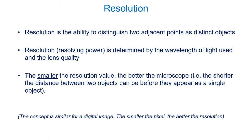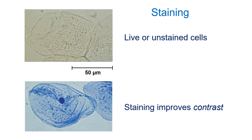Another way to increase resolution is to reduce the wavelength of light being used. For instance, you could use ultraviolet light, which has a shorter wavelength than visible light, giving higher resolution — and such microscopes do exist. They're expensive, and since humans can't see UV light, you need them hooked up to a digital sensor. The smaller the resolution value — that is, the minimum distance between two points that can still be distinguished — the better the microscope. Resolution determines the level of detail we'll be able to see.